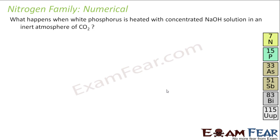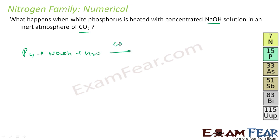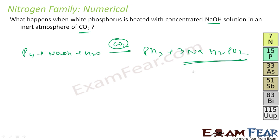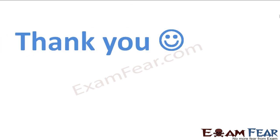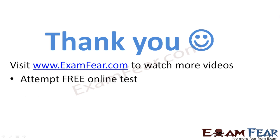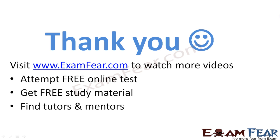Example question: What happens when white phosphorus is heated in concentrated sodium hydroxide solution in an inert atmosphere of carbon dioxide? White phosphorus reacts with NaOH in water, in an inert CO2 atmosphere, to give PH3 and NaH2PO2 — sodium hypophosphite. This is the reaction. Visit examphia.com to watch more videos, attempt free online tests, get study materials, find tutors and mentors, and much more.